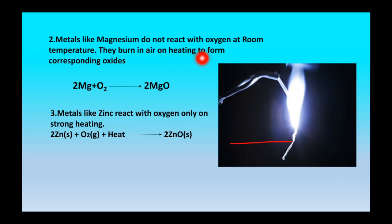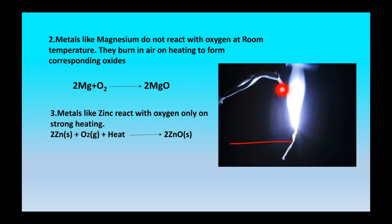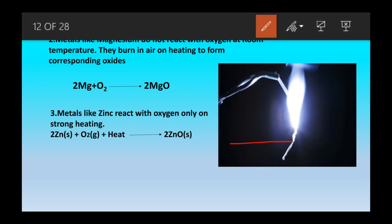Magnesium does not react with oxygen at room temperature. To react with oxygen, we have to burn the magnesium ribbon. When the magnesium ribbon is burned, it burns with a white dazzling flame and the residue formed is magnesium oxide. So magnesium ribbon burned in the presence of oxygen forms magnesium oxide.